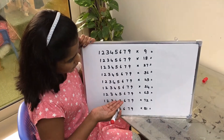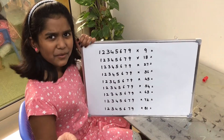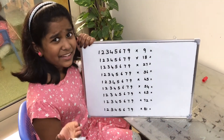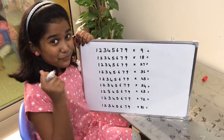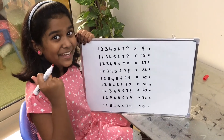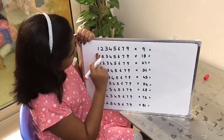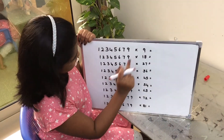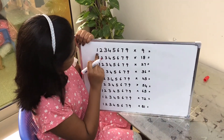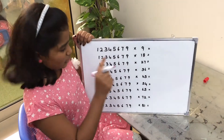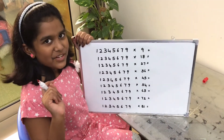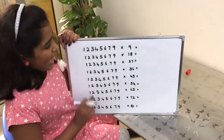By seeing this question, you can know that this looks very hard. No, this is very, very easy. In this question, the numbers have 1, 2 through 9, but in all the questions the number 8 is missing.